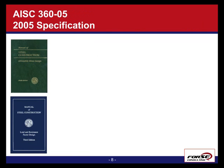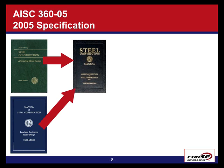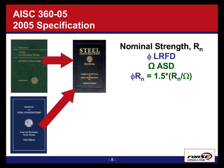Taking a step back to 2005 — starting with the ASD manual from 1989 and the LRFD manual from 2001 — they came together in the specification and manual in 2005. The main thing, which is now the standard, is that LRFD and ASD appear side by side in the specification. LRFD uses a phi factor times the nominal strength, while ASD uses a safety factor and divides the nominal strength by the safety factor to get what is referred to as the available strength.